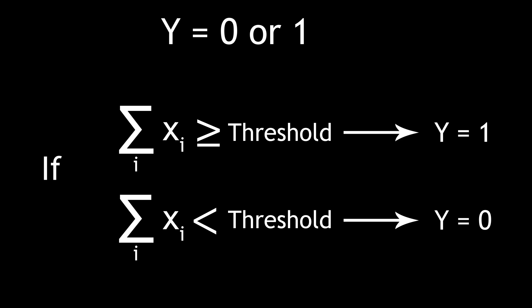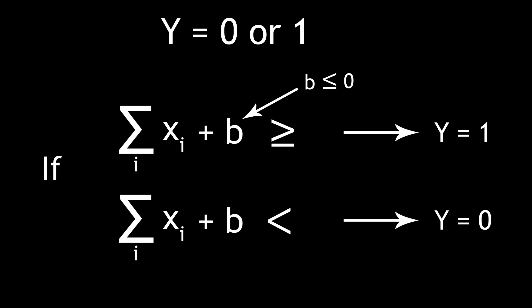The idea of a threshold is a good starting point, but in practice, we instead tend to say that the output is equal to 1 if the sum plus some negative number b, called the bias, is greater than or equal to 0. The bias is a representation of how easy it is for the perceptron to output a 1, but it's no different from the threshold idea. It just keeps everything centered around 0.